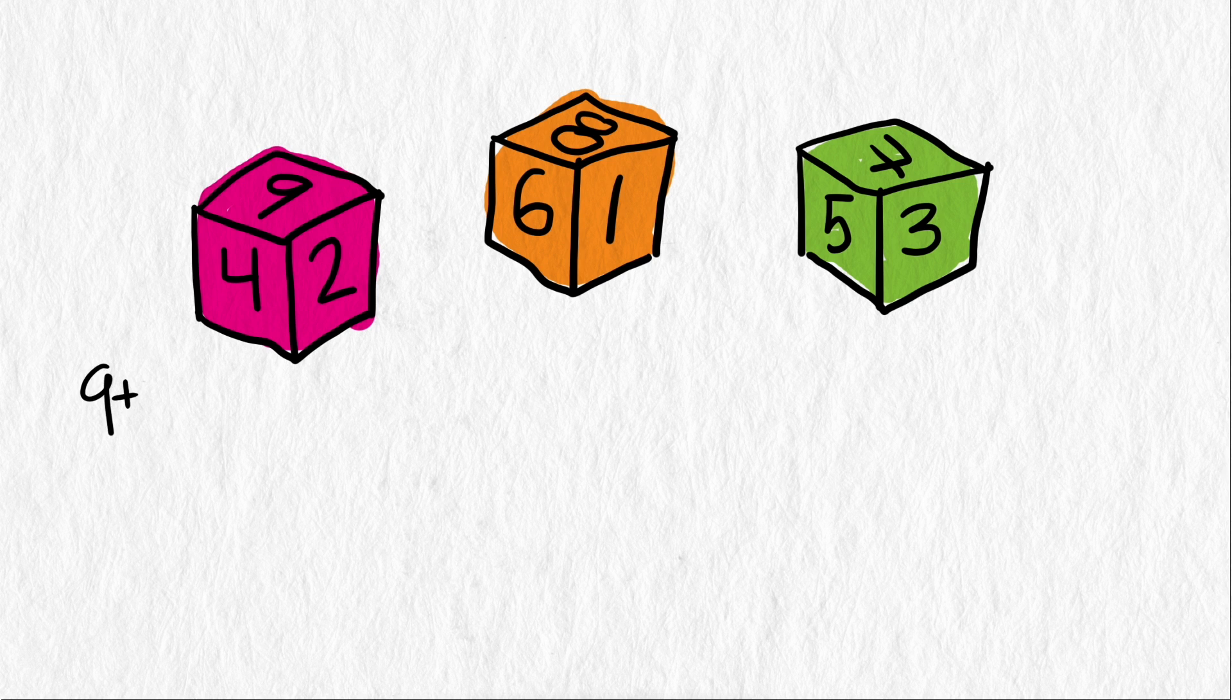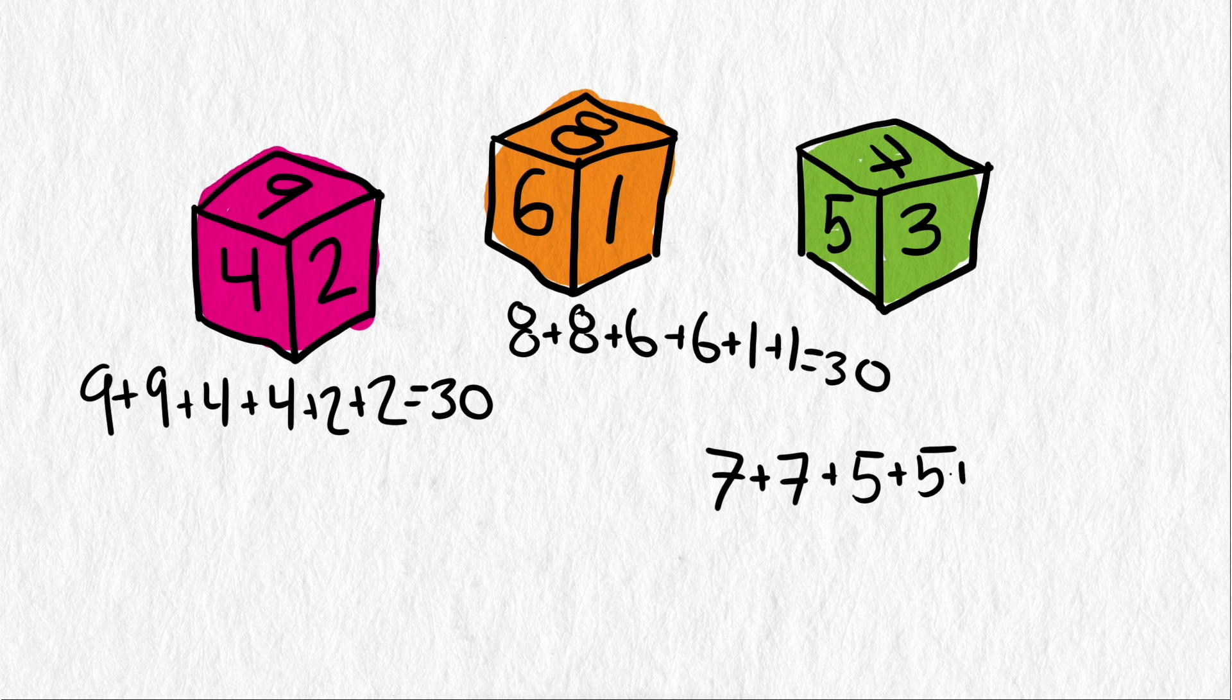The sum on each of these dice are all the same, 30. So you might think it shouldn't matter which one you pick if you're going to roll a higher number in an effort to beat one of the other die. But actually, it does.